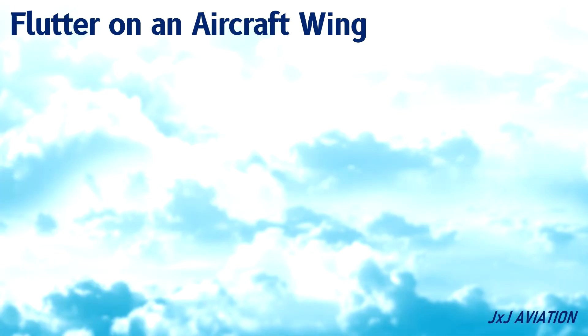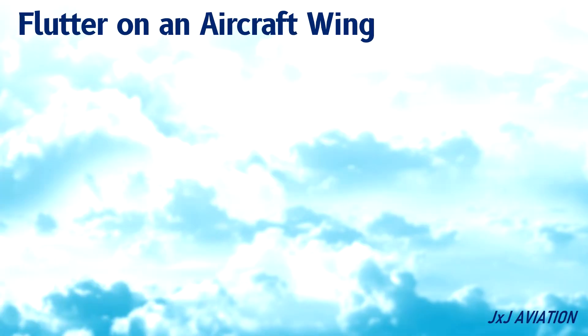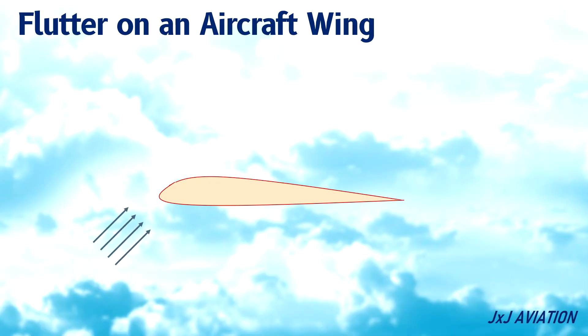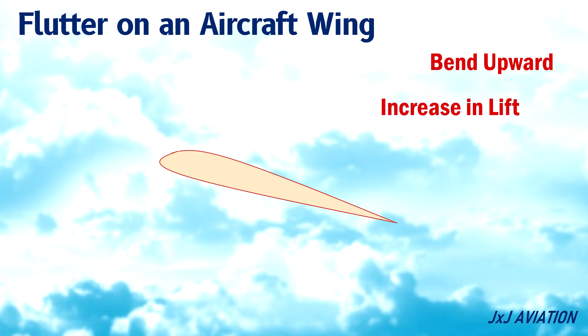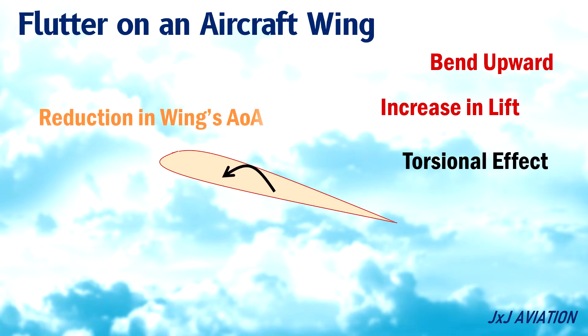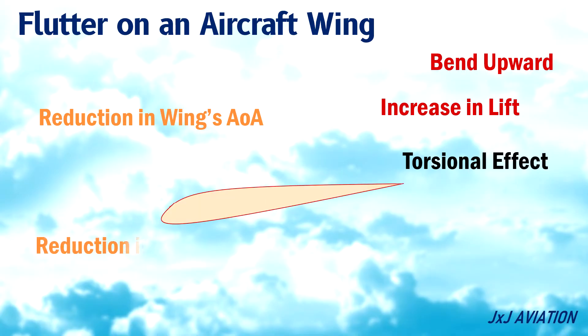Flutter on an aircraft wing. When a disturbance occurs across the wing, it will flex and bend upward, causing an increase in the lift. This sudden increase in the lift causes a twist, or a torsional effect, on the wing. The twist causes a reduction in the wing's angle of attack, causing a reduction in the lift.